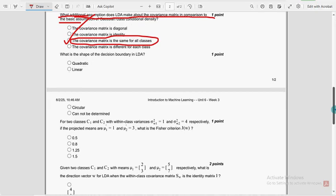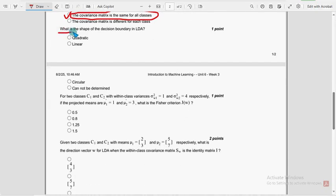Seventh question. What is the shape of the decision boundary in LDA? For seventh question, second option, linear is the probable solution.